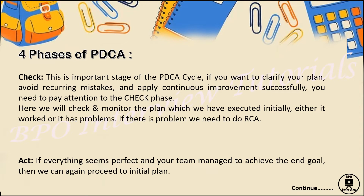The last phase is Act. If everything seems perfect and your team managed to achieve the end goal, then we can proceed again to the initial plan — because as I said, it is a continuous process. The cycle goes again and again through PDCA. In the Act phase, if everything was good, we implement the same plan again to see whether the problem continues to get solved.